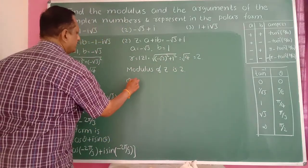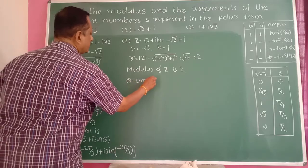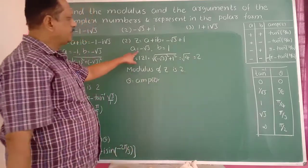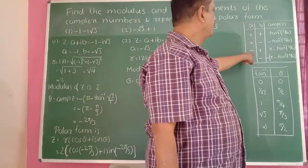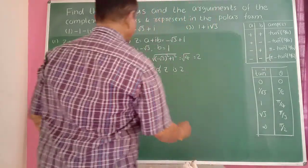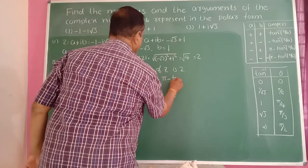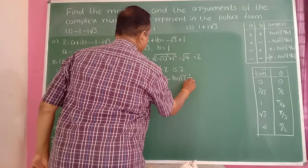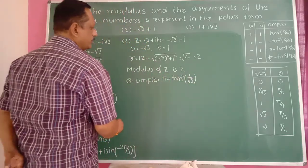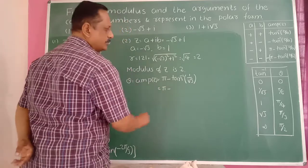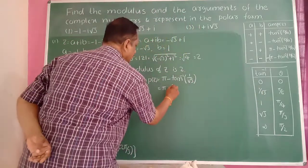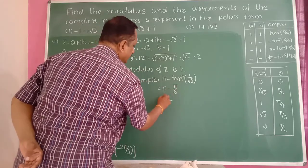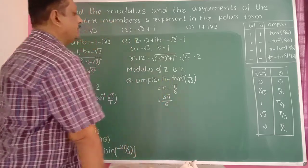Now find the amplitude. Theta equals amplitude of z. Here a is negative and b is positive — that is the second quadrant case, so theta equals pi minus tan inverse of |b/a|, which is pi minus tan inverse of 1/√3. Tan inverse of 1/√3 is pi/6, so this becomes pi minus pi/6, which gives 5π/6.